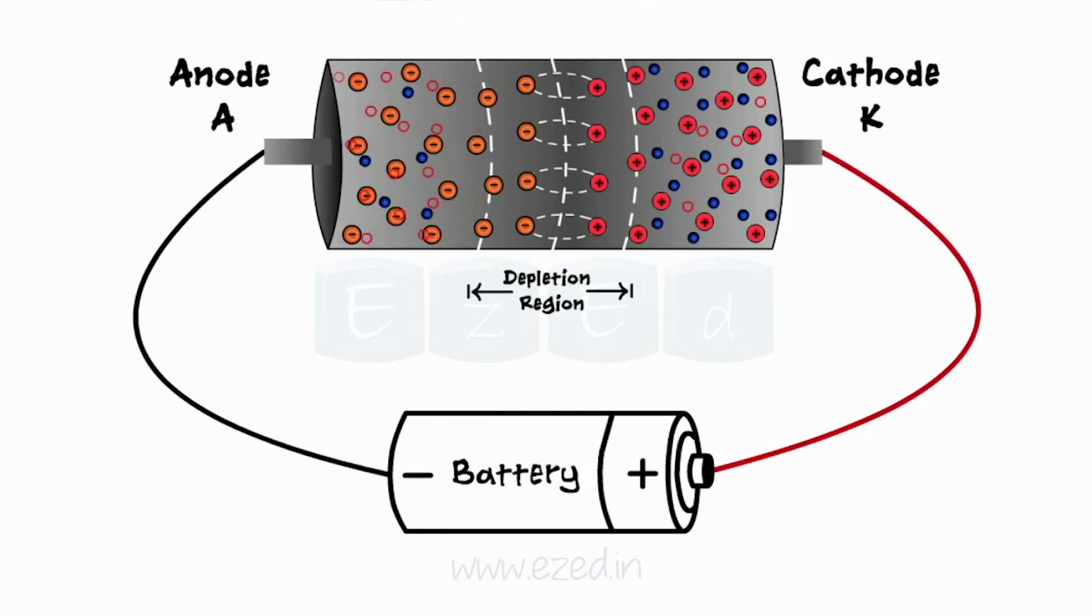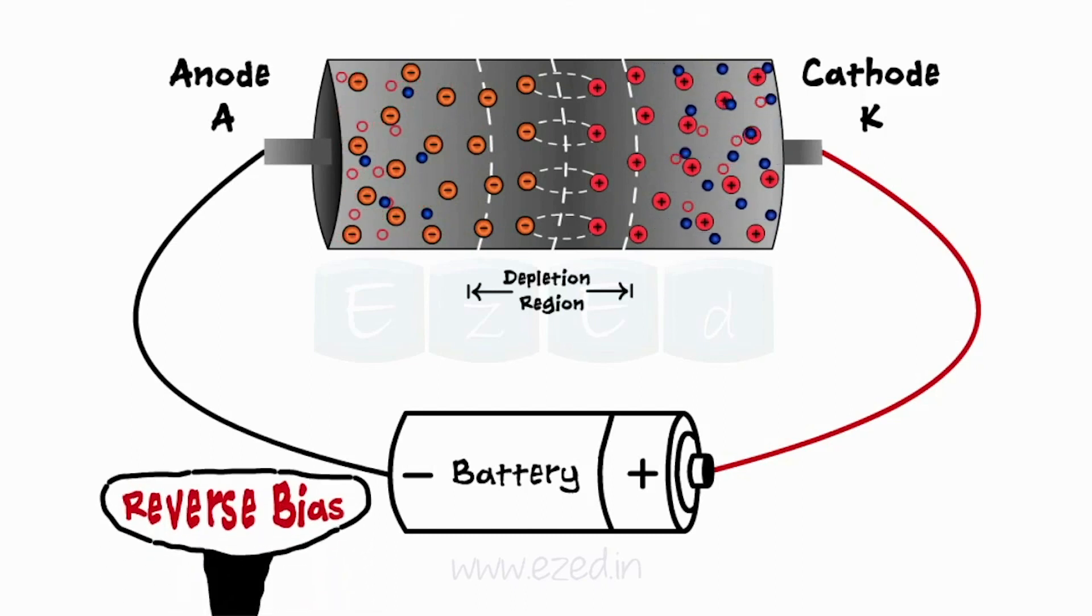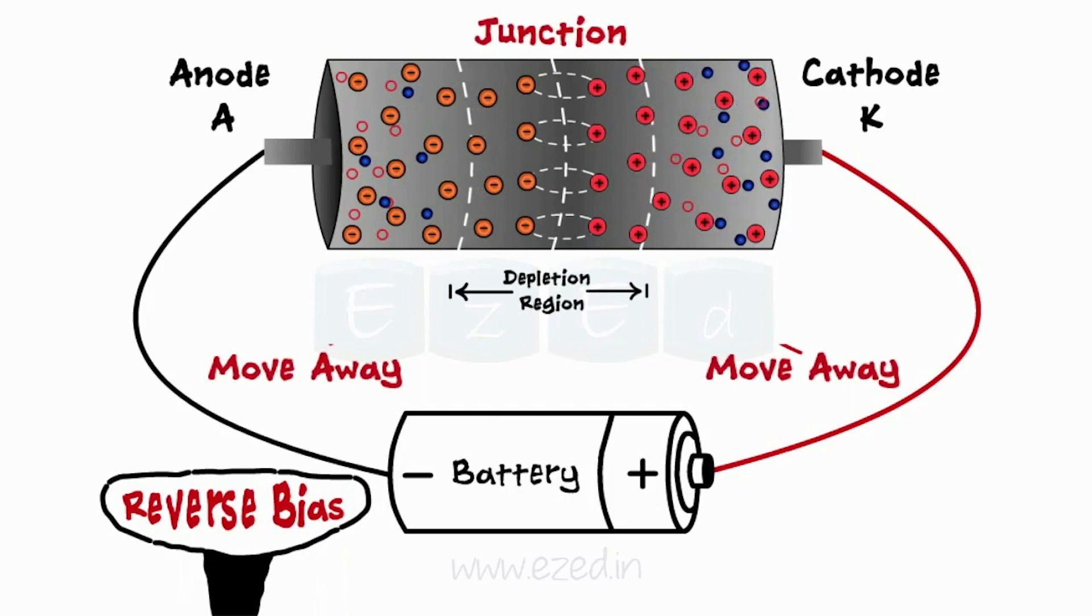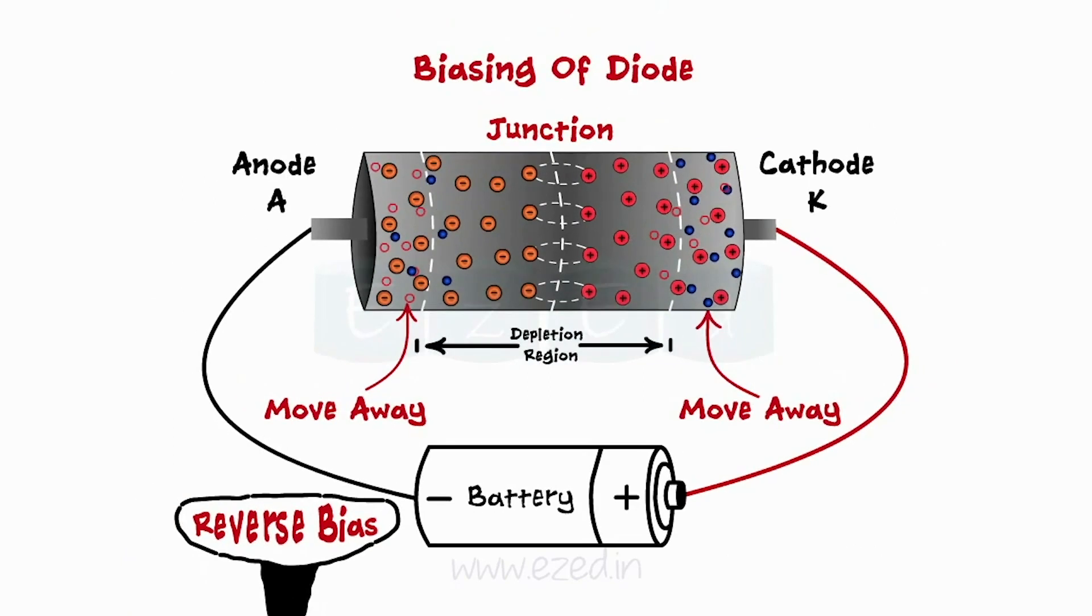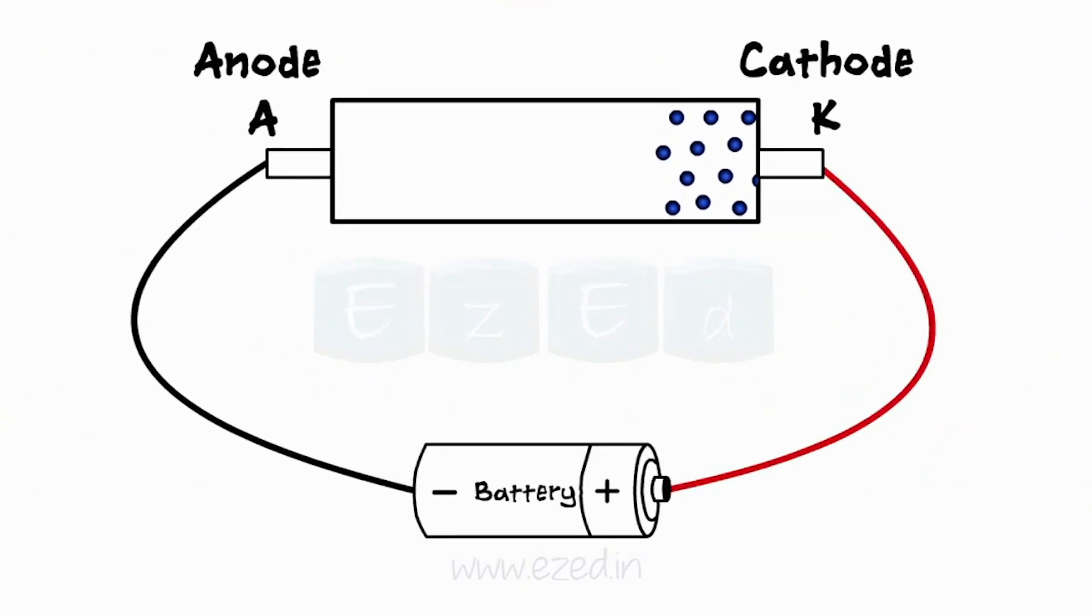As a result, holes are pulled towards the negative of the battery and electrons from the N side are pulled towards positive of the battery. Thus, holes and electrons move away from the junction, which leads to an increase in the depletion region width. No current flows through the diode.